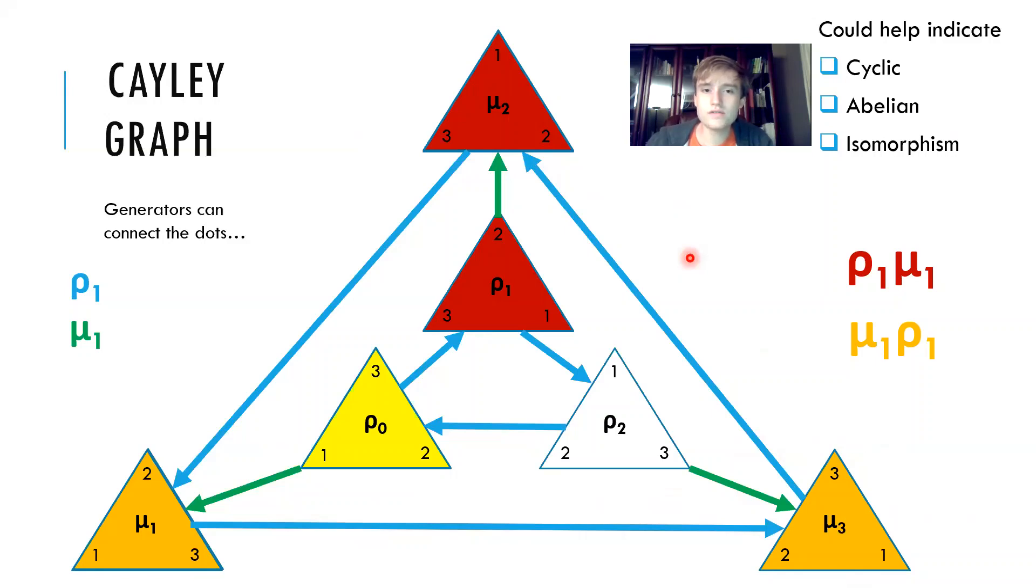We can also see from Cayley graphs between two different groups if they're isomorphic to each other. If we had another group like D3, we would see that the Cayley graph would look very similar to this, which means that they're isomorphic to each other.